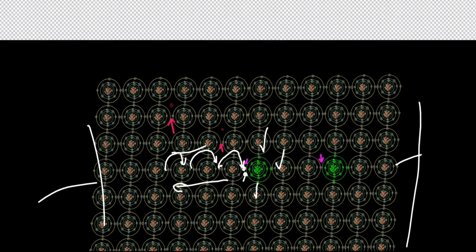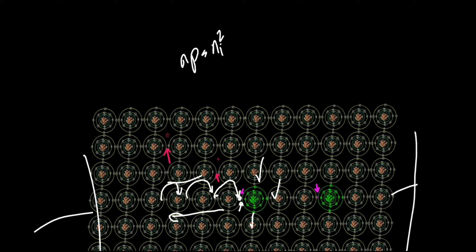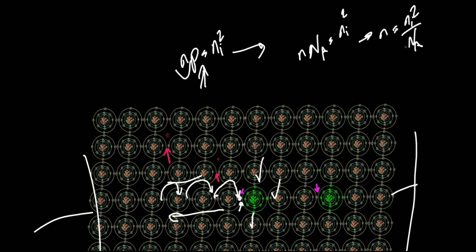For every boron atom injected into the silicon piece, one hole is added. Since np = Ni squared always holds, the number of holes equals the number of boron atoms injected, shown as NA — A for acceptor, because boron accepts electrons. Free electrons that existed fill some of the new holes. Therefore, the number of free electrons N equals Ni squared divided by NA. In this P-type piece, free electrons are the minority carriers and holes (NA) are the majority carriers.